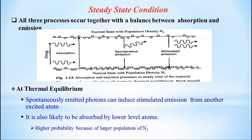At thermal equilibrium, spontaneously emitted photons can induce stimulated emission from another excited atom. This property you can see in case of helium neon laser. It is also likely to be absorbed by lower level atoms. Higher probability of this occurrence because of large population of N1, where N1 is the population density of ground state. Population density means number of atoms in that energy state. Here E1 represents ground state energy.